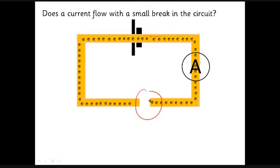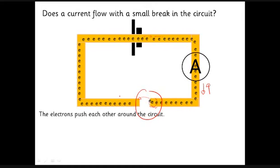We do get a little bit of a flow of charge through the ammeter, so it does measure a small current for a while. But these electrons can't get out at the end of this wire and jump across to the other side, so they build up a little bit. These electrons start repelling each other, pushing back. If you're an electron in the middle, you're being pushed one way by the battery but pushed back by the electrons building up at the end. When those two forces become equal, the electrons stop flowing and there's no current anymore.